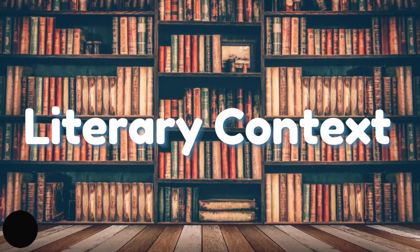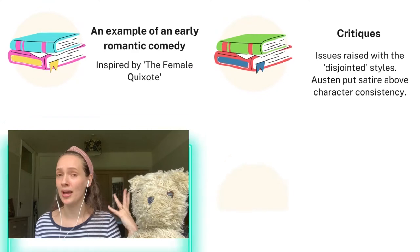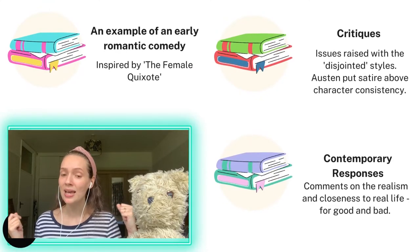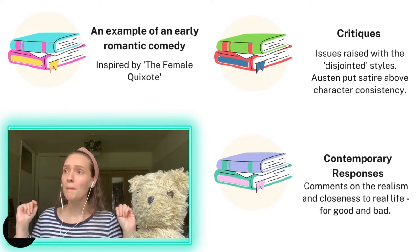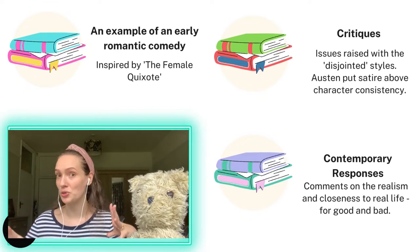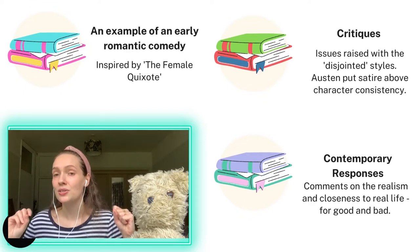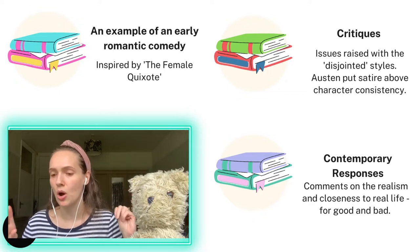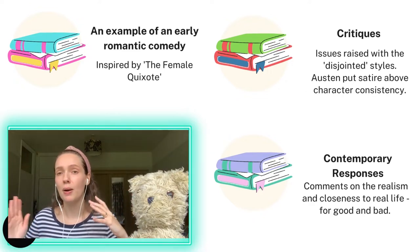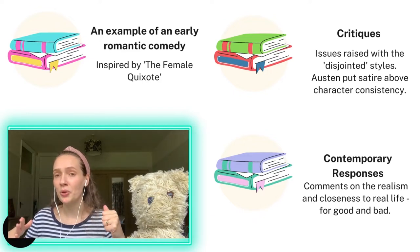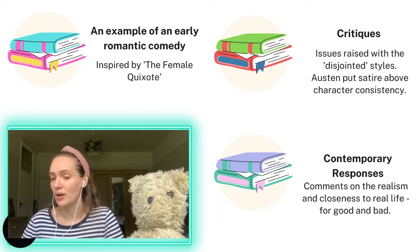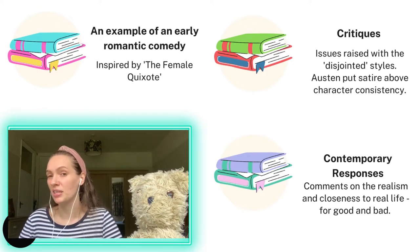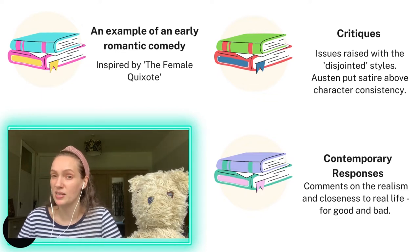The literary context of Northanger Abbey: you could argue that it is an early example of a romantic comedy, and it's said that this book was inspired by the novel The Female Quixote. However, this book has come in for a lot of criticism from literary critics — Austen has been accused of disjointed writing styles, with critics of the 20th and 21st century feeling that her use of the gothic writing style alongside her own more fluffy, charming style just did not work. Some people didn't think she wrote in the gothic style very well — it was considered a poor parody.